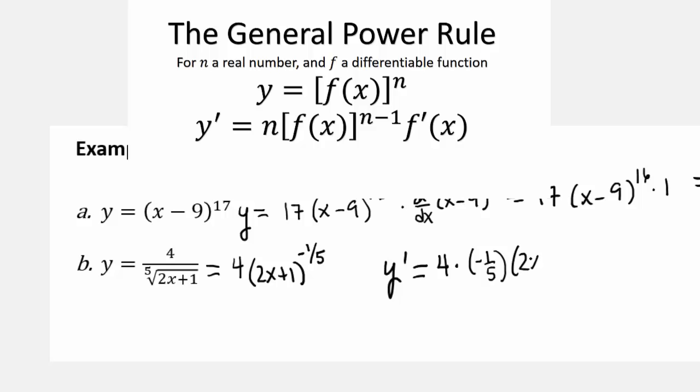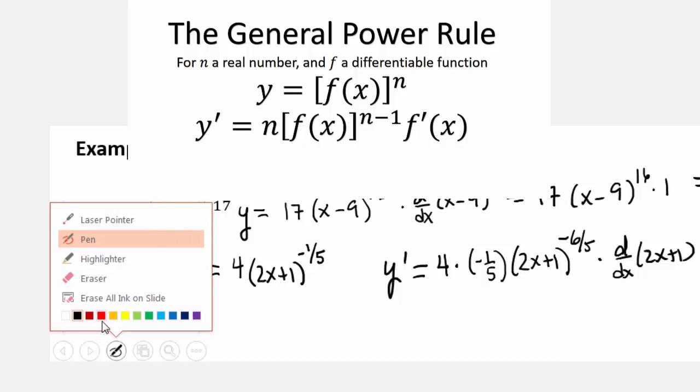the 2x plus 1 stays the same. Subtract 1 from the exponent gives us, good, negative 6 fifths times the derivative of 2x plus 1. And what's the derivative of 2x plus 1? 2.